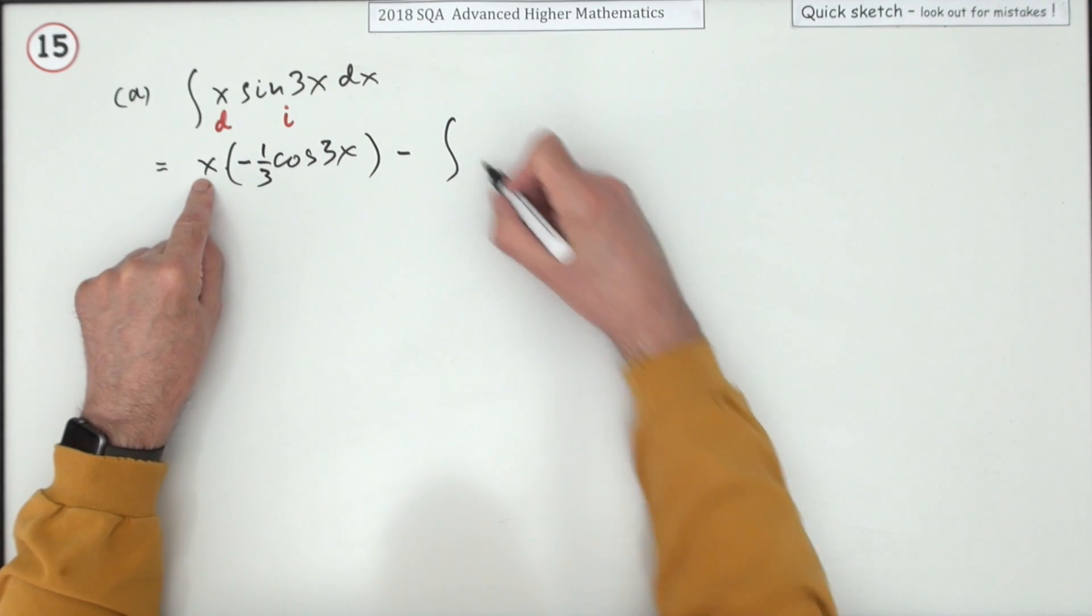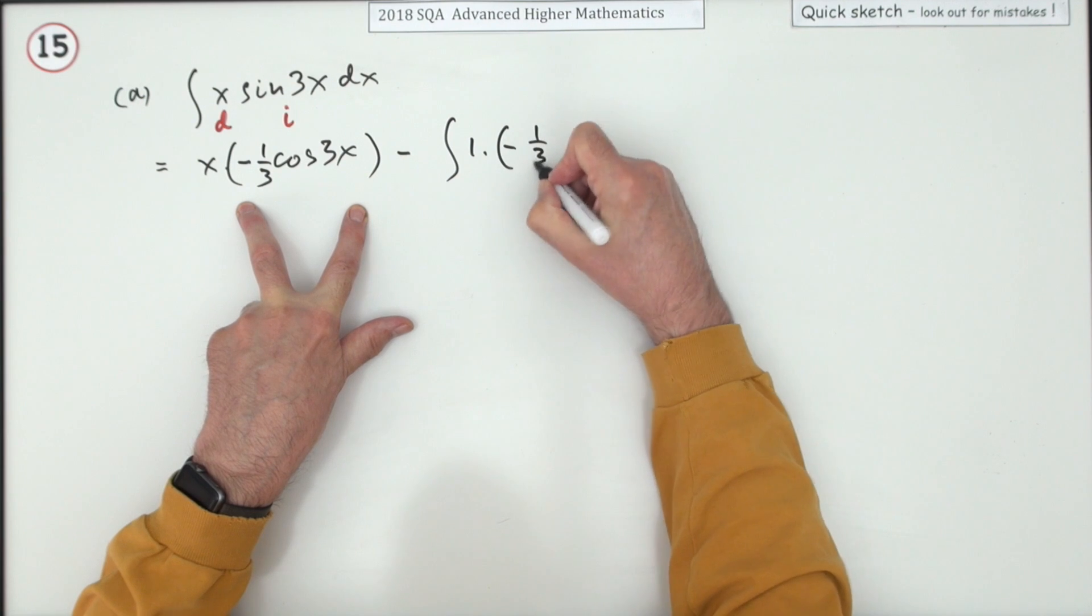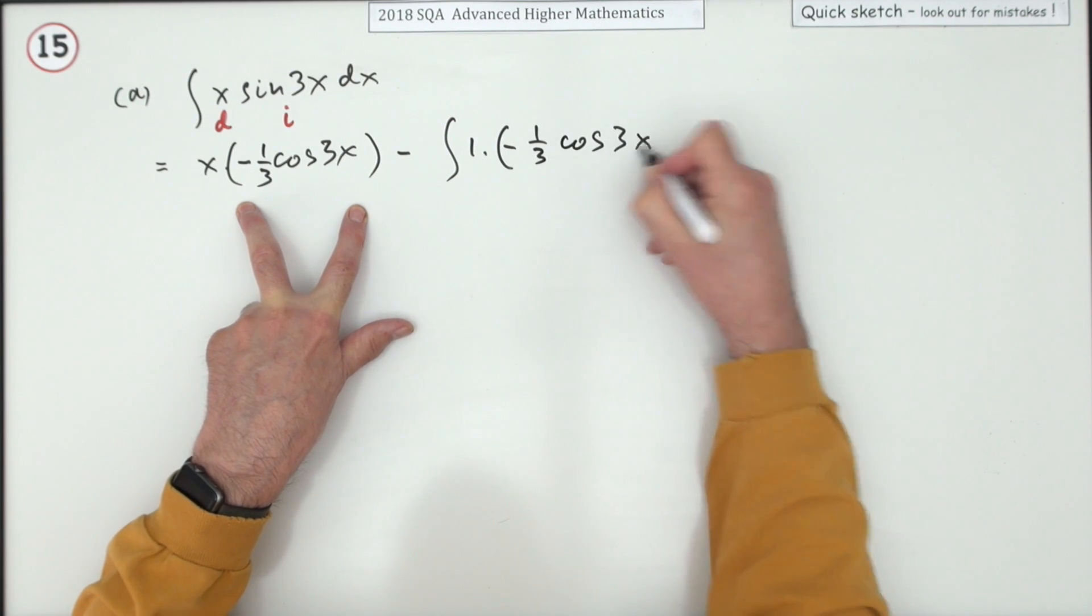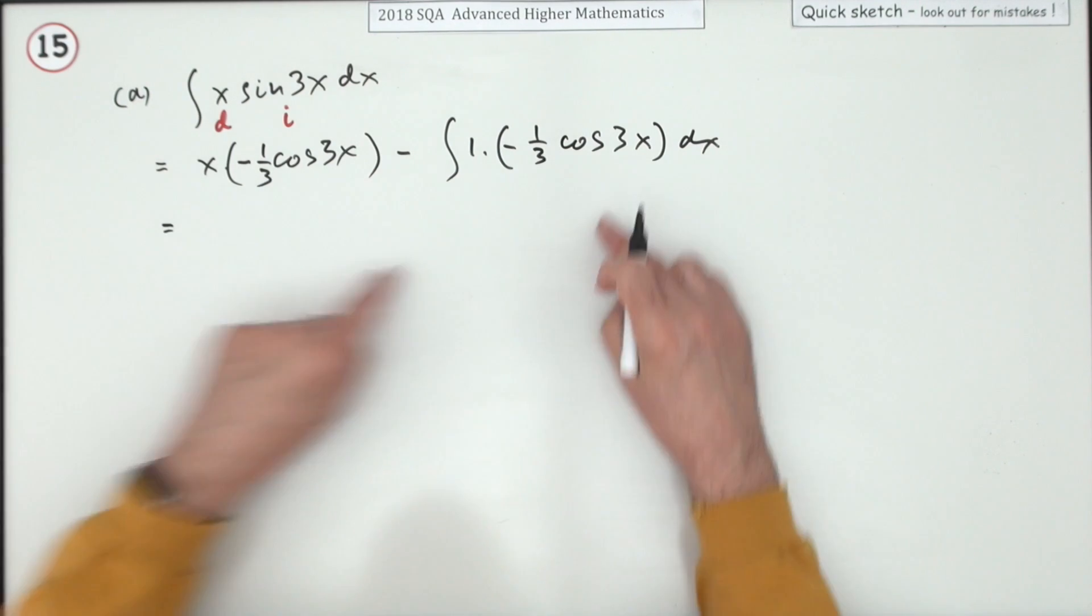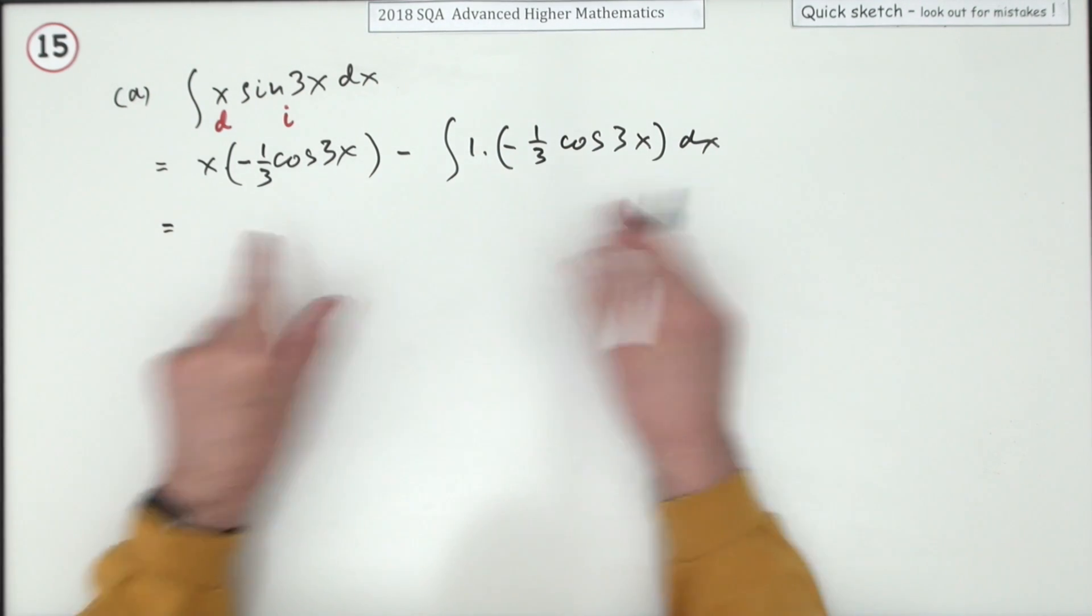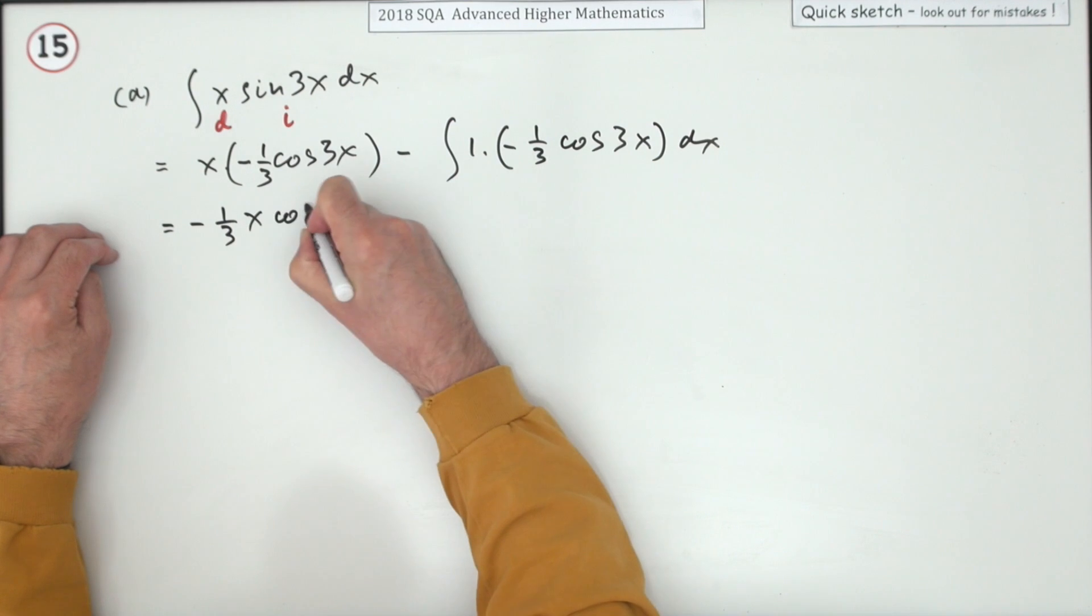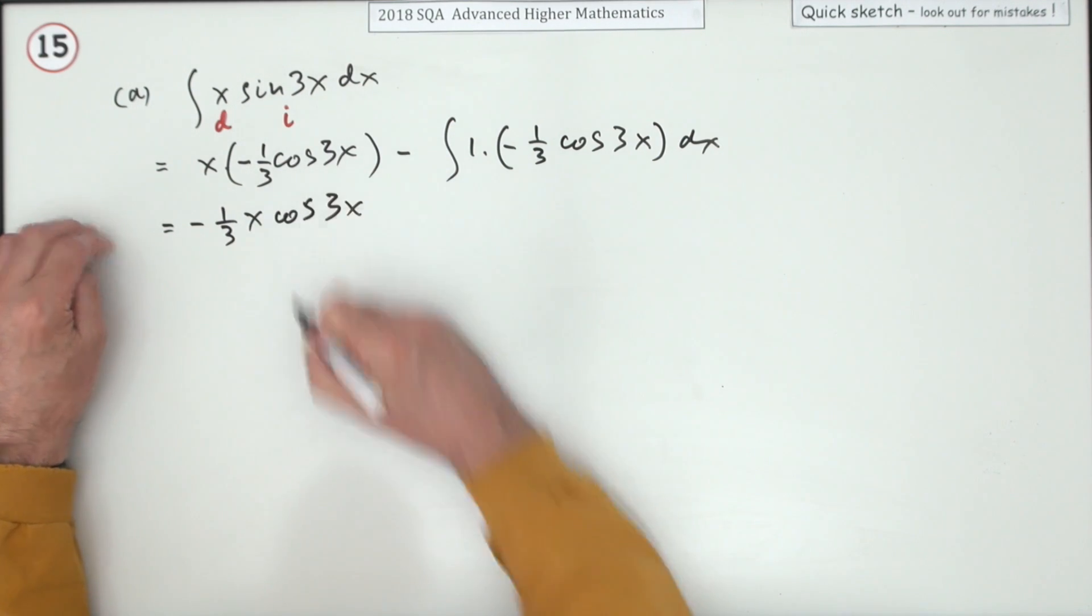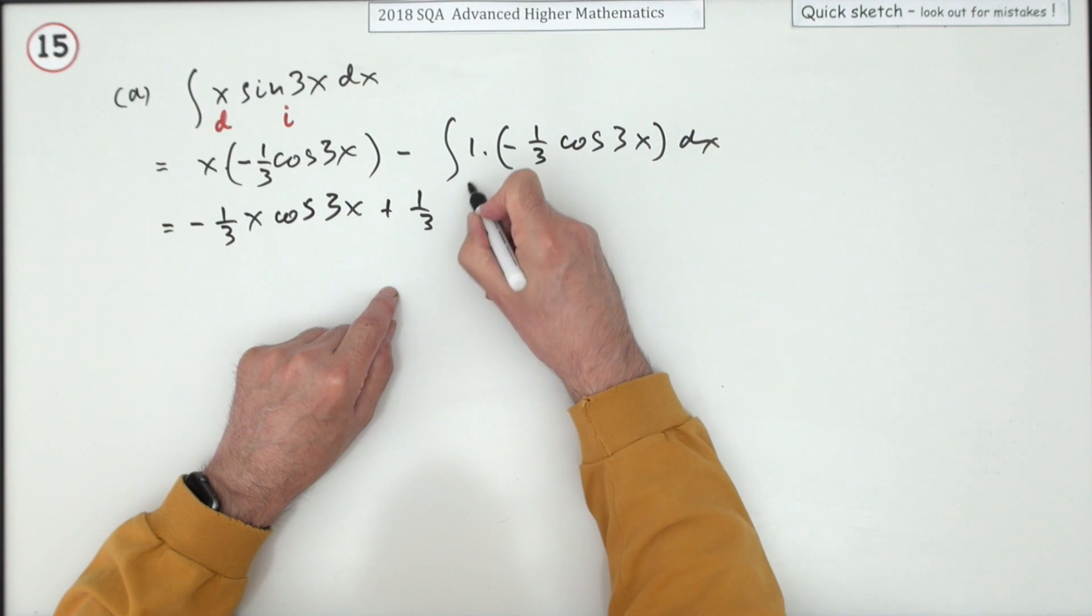That part's been done, so that's going to transfer over. Now differentiate this one - that goes down to one. So that transfers back over as negative a third cos 3x. At this point you could just go straight to the answer, but I'll tidy it up first.